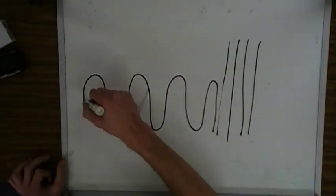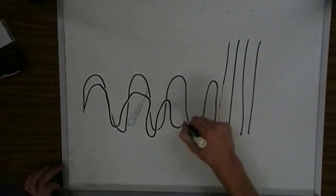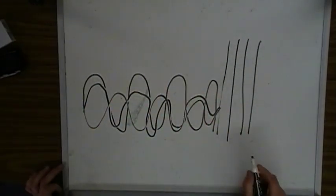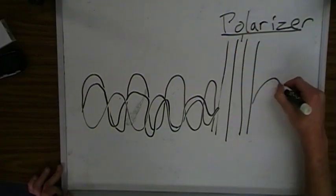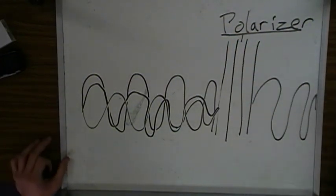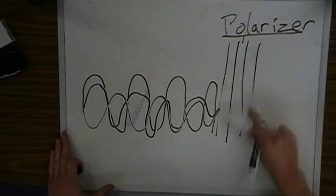Now what a polarizer can do is even out those waves and separate them in such a way that you end up getting a single stream of light. And this implies a couple of things.